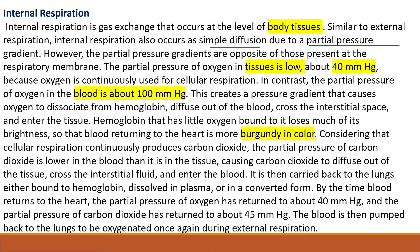The partial pressure variances in internal respiration are opposite to those at the respiratory membrane. The partial pressure of oxygen in the tissues is about 40 mmHg, while in the blood it is 100 mmHg. This pressure gradient causes oxygen to dissociate from hemoglobin and move into the tissues.